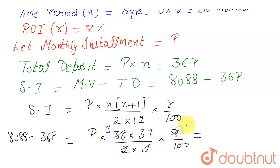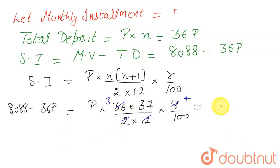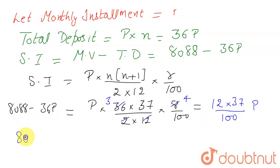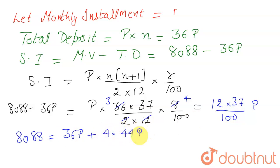Simplifying: 36 cancels with 12 to give 3, and 2 cancels to give a factor, resulting in 3 × 4 = 12. So we get 12 × 37 / 100 × P, which simplifies to 4.44P. Therefore SI = 4.44P.